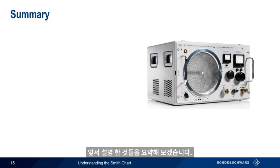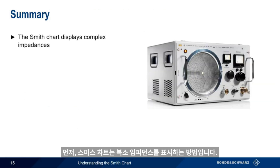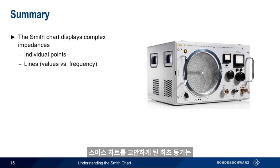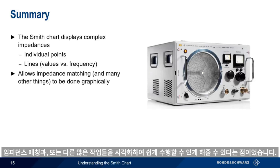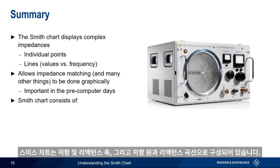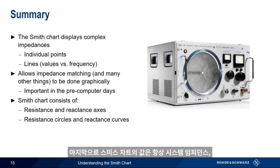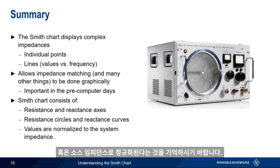Let's summarize what we've learned. First, the Smith Chart is a way of displaying complex impedances — either as individual points or as lines showing values as a function of frequency. The initial motivation for creating the Smith Chart was that it enables impedance matching to be done graphically instead of algebraically, which was particularly important prior to modern computational methods. A Smith Chart consists of resistance and reactance axes, resistance circles, and reactance curves. And lastly, remember that values on a Smith Chart are always normalized to the system impedance.